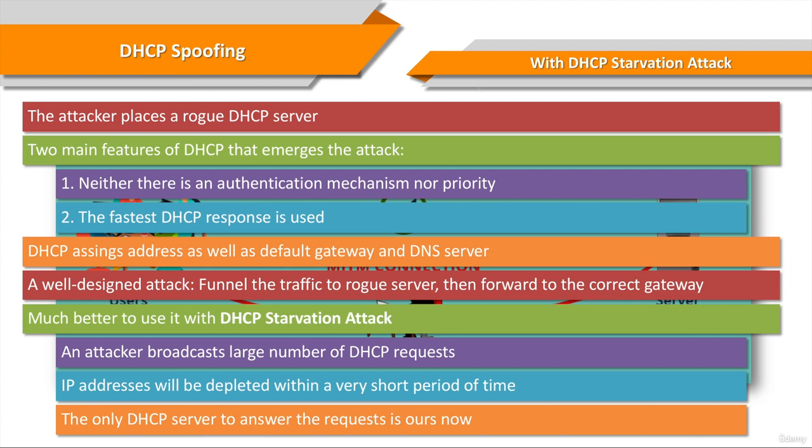Now, once the available number of IP addresses in the DHCP server is depleted, network attackers can then set up a rogue DHCP server and respond to new DHCP requests from the network DHCP clients. By setting up a rogue DHCP server, the attacker can now launch a full DHCP spoofing attack.